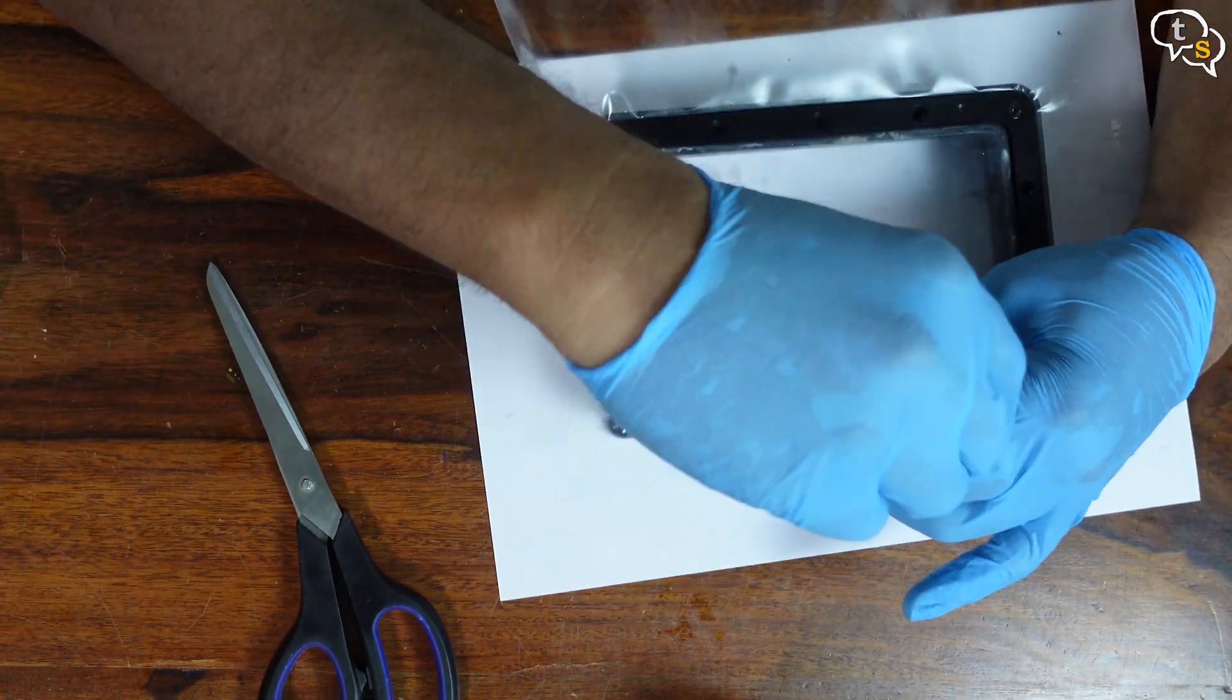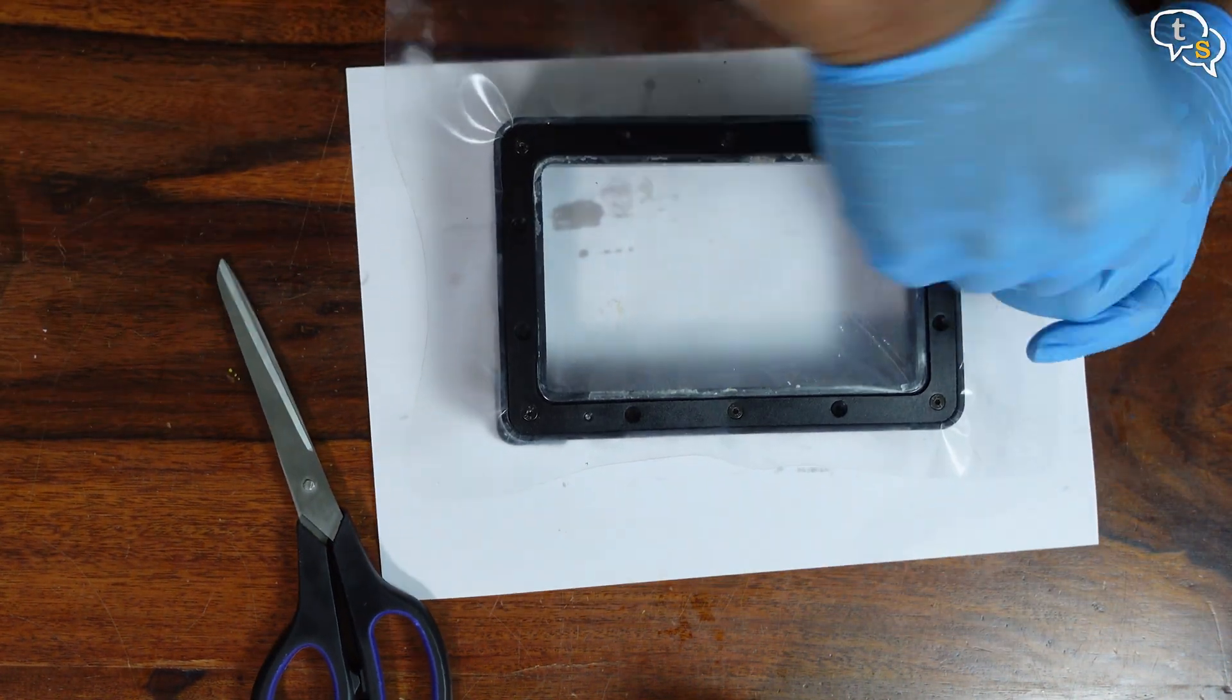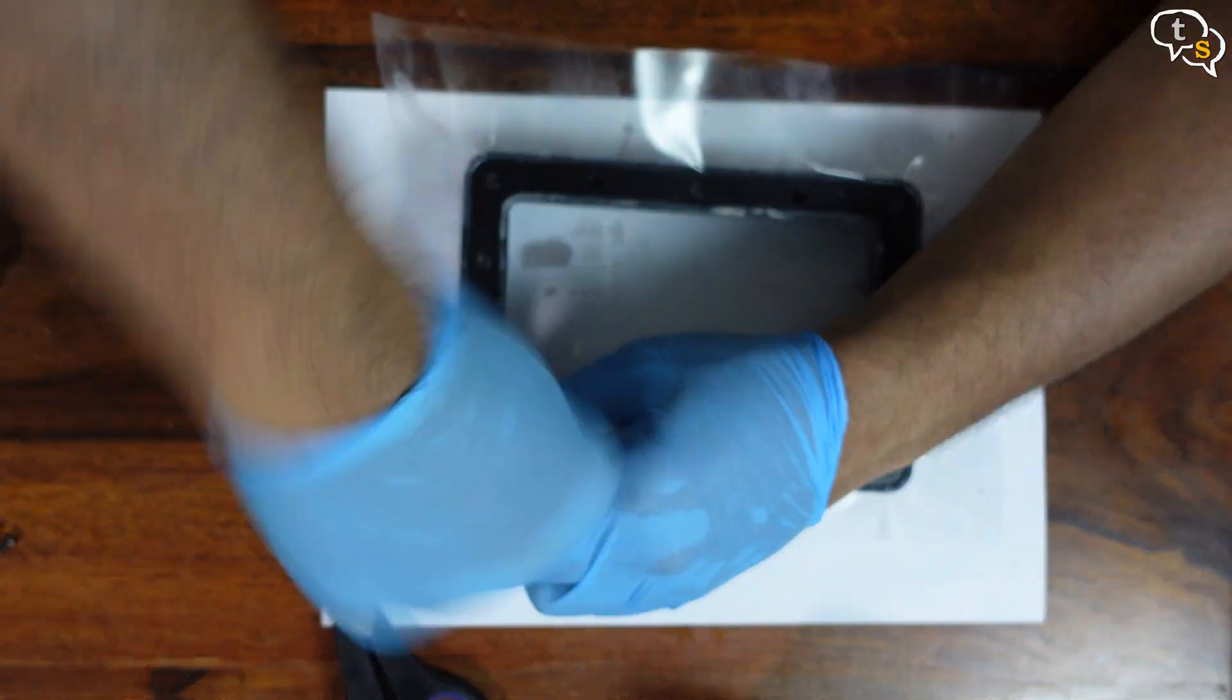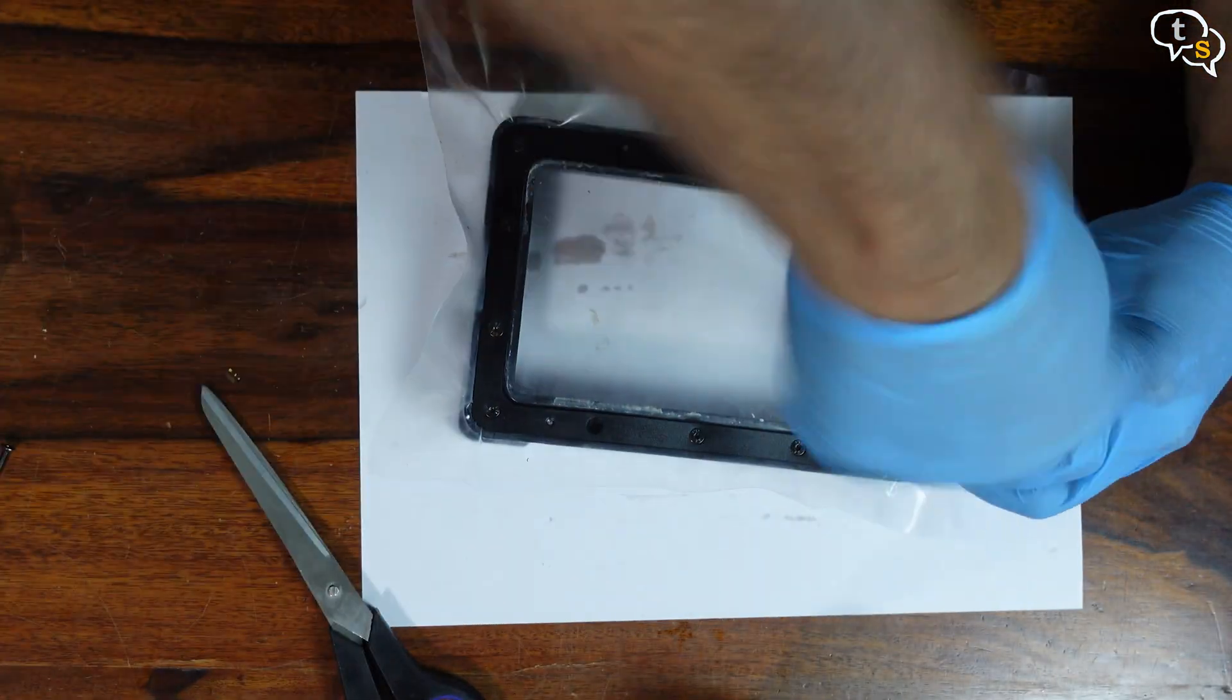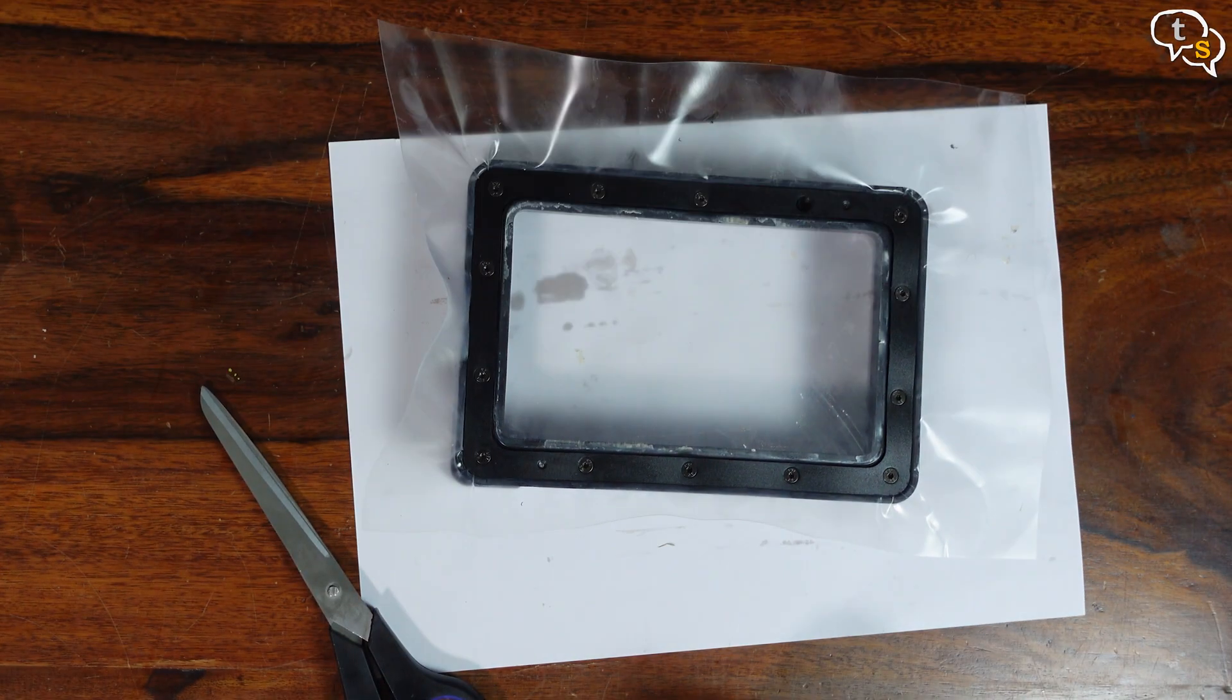Now choose a hole diagonally away and screw it in. Continue screwing in at opposite edges. This keeps the tension even. Don't over tighten, you don't want the film to wrinkle or tear.